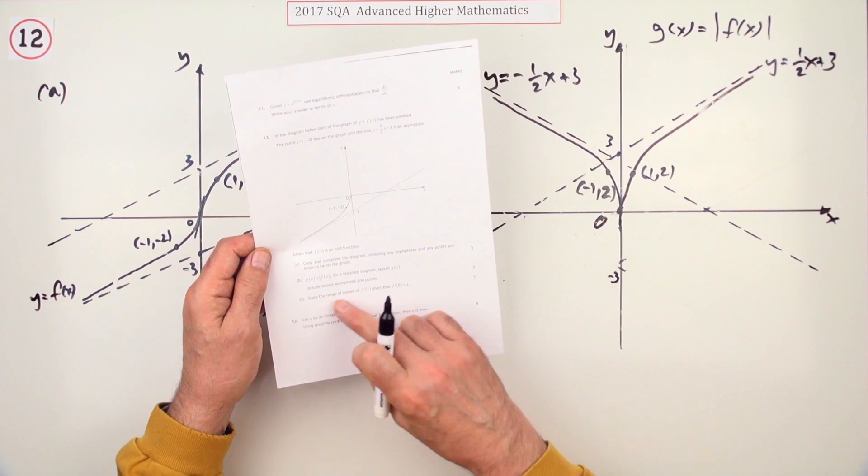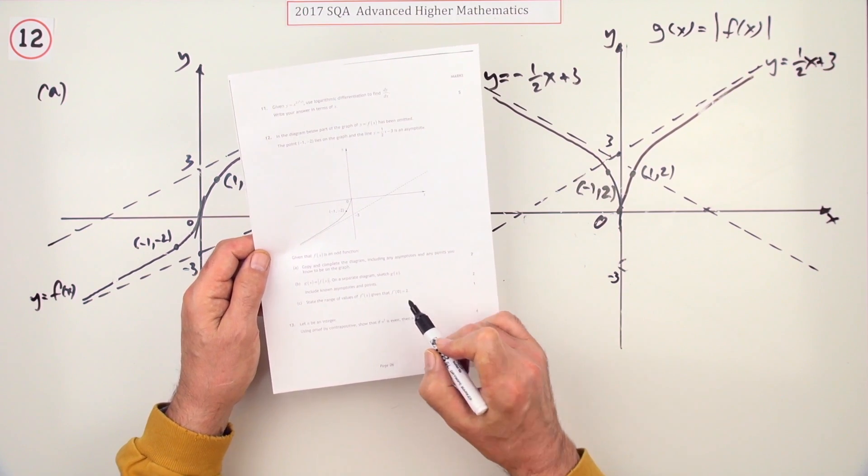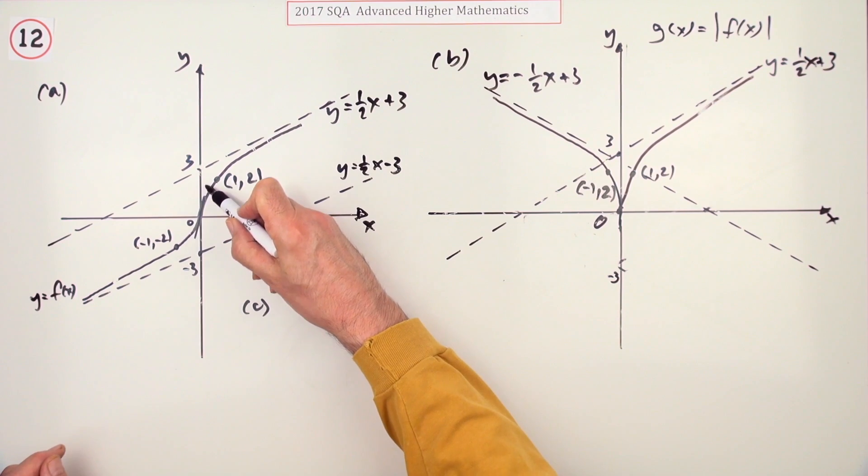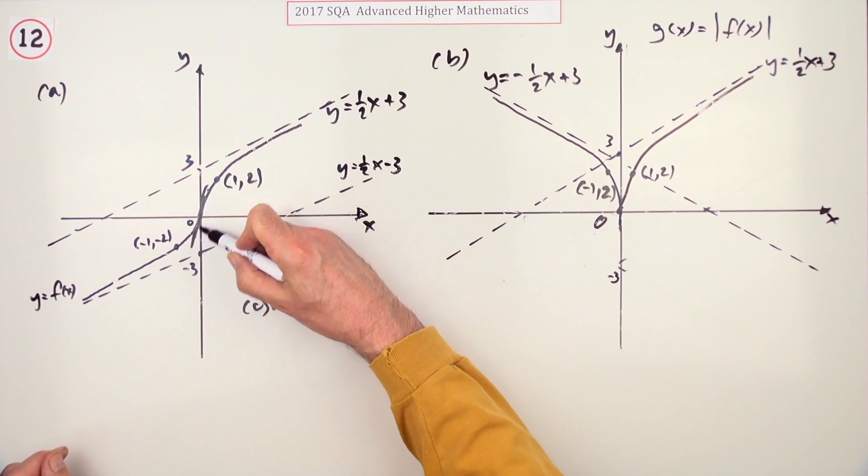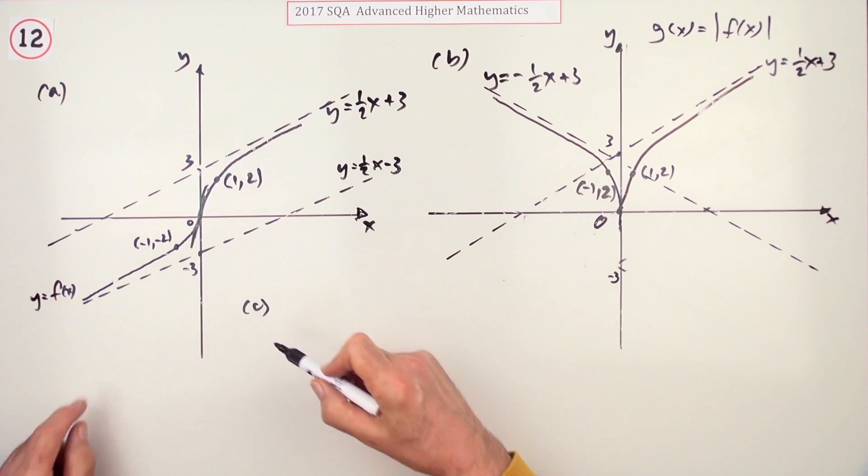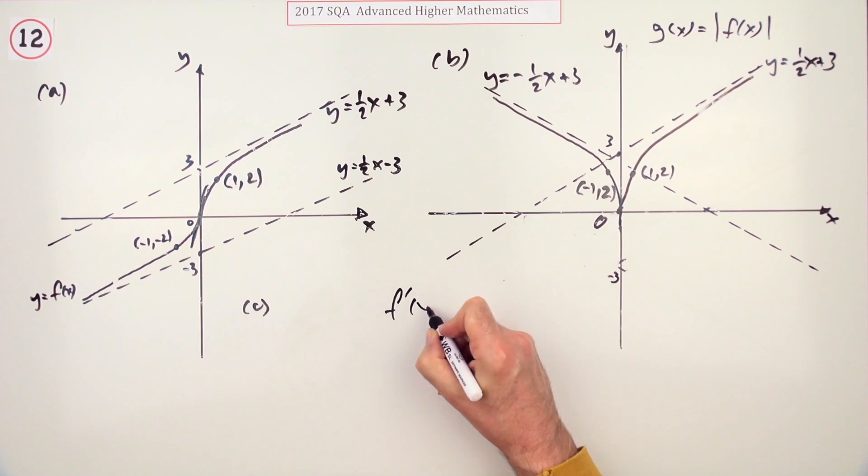Part c says state the range of values of f'(x) given that f'(0) is 2. f'(0) is the gradient of that curve at the origin, and that's the steepest it ever gets. It gets its steepest here, then it begins to level off again.